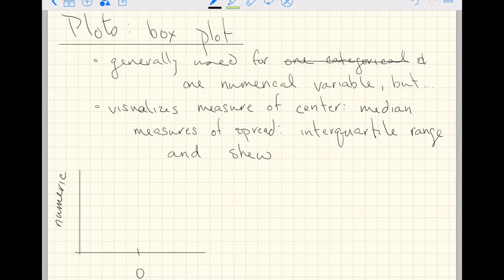So box plots get their name because in the middle of them they have a box with a line through the middle. The line in the middle is the median or the 50th percentile.